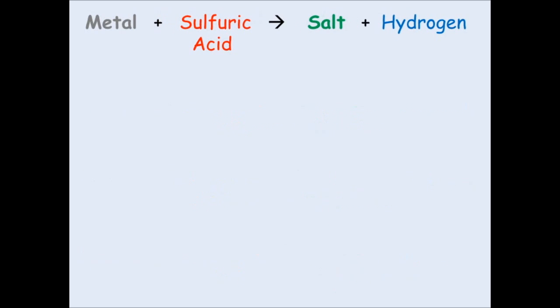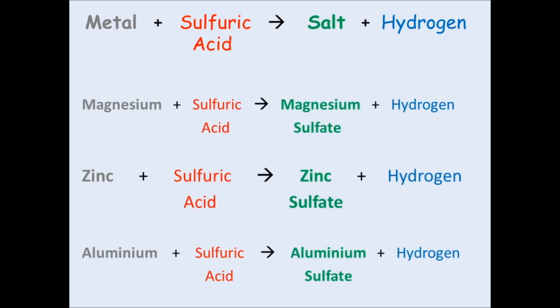So same pattern if you use sulfuric acid, except instead of a chloride, you get a sulfate. So magnesium plus sulfuric acid, you get magnesium sulfate plus hydrogen.